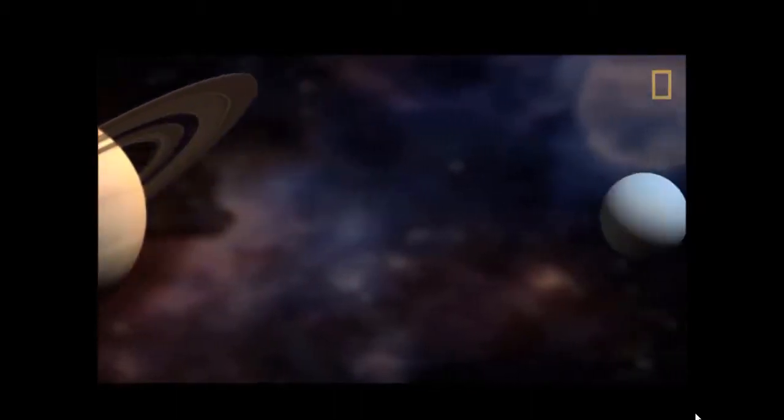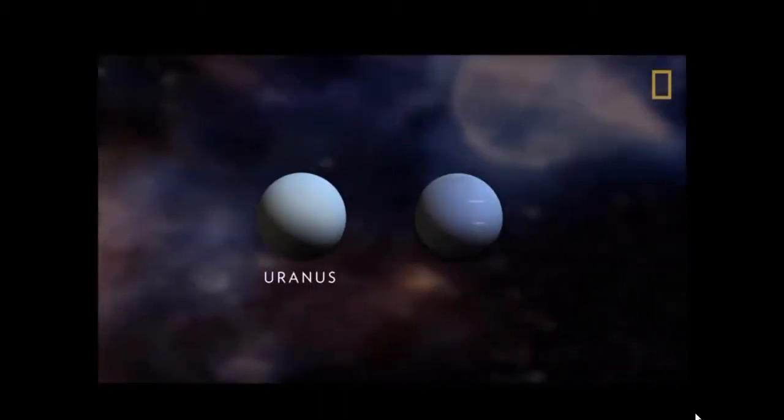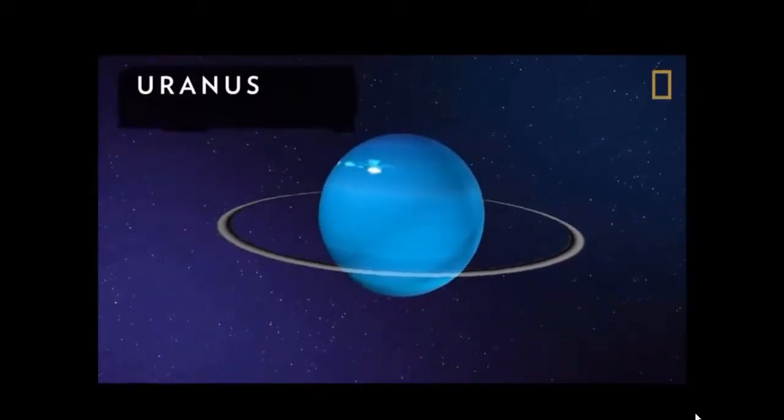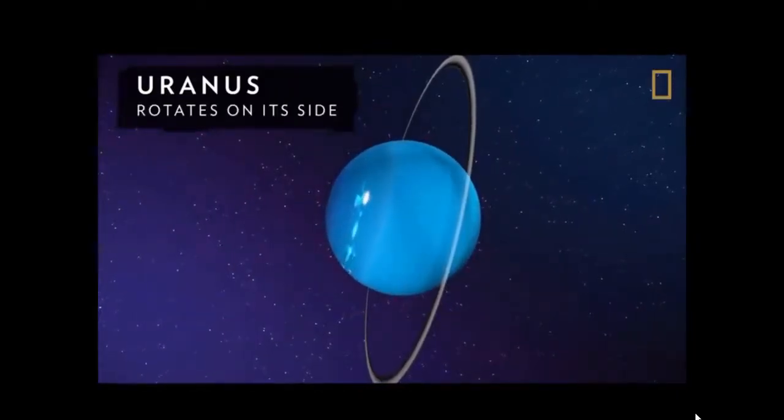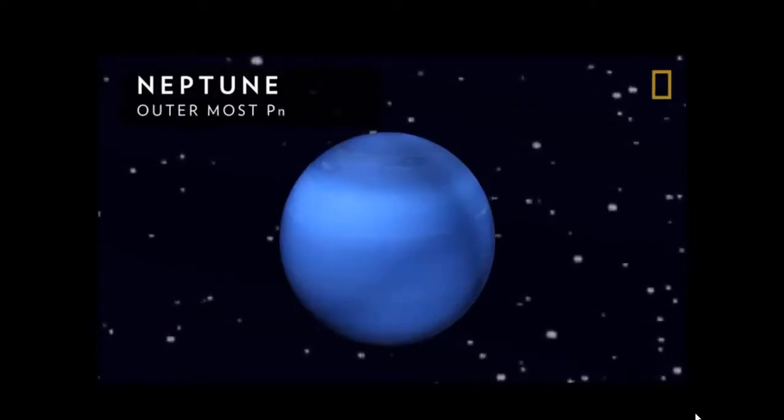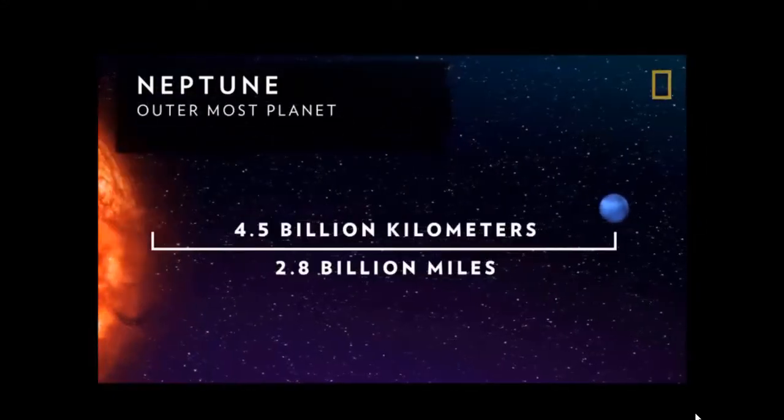After the gas giants there are Uranus and Neptune. Uranus rotates on a tilted axis. Neptune is the outermost planet in the solar system and one of the coldest.